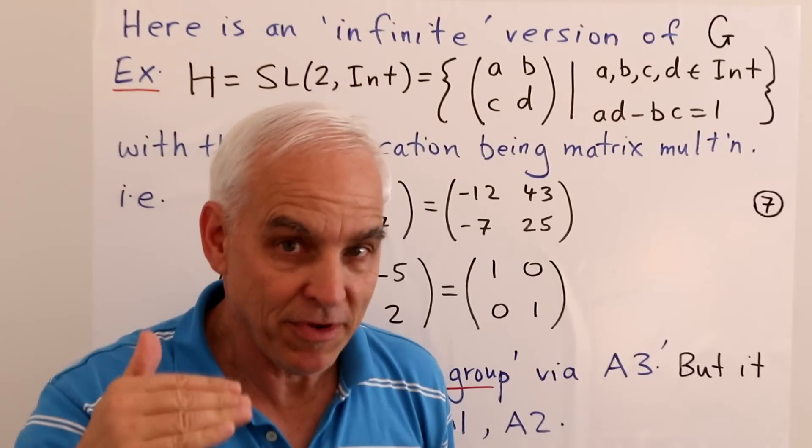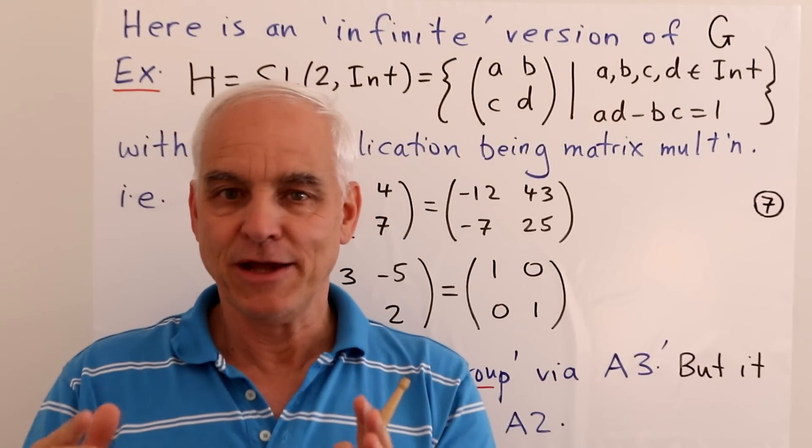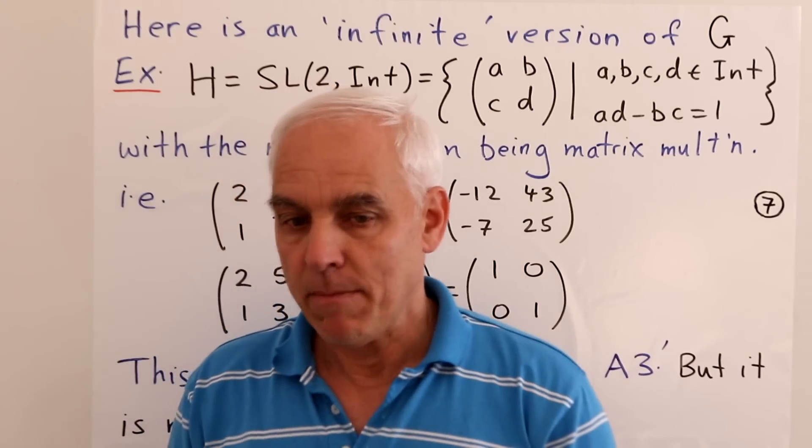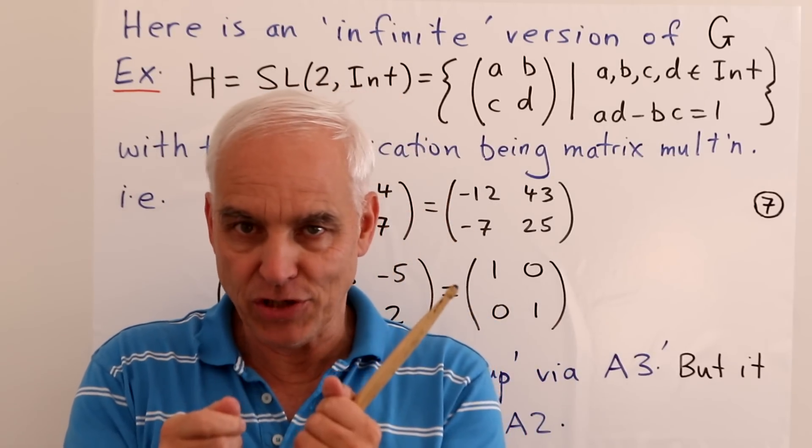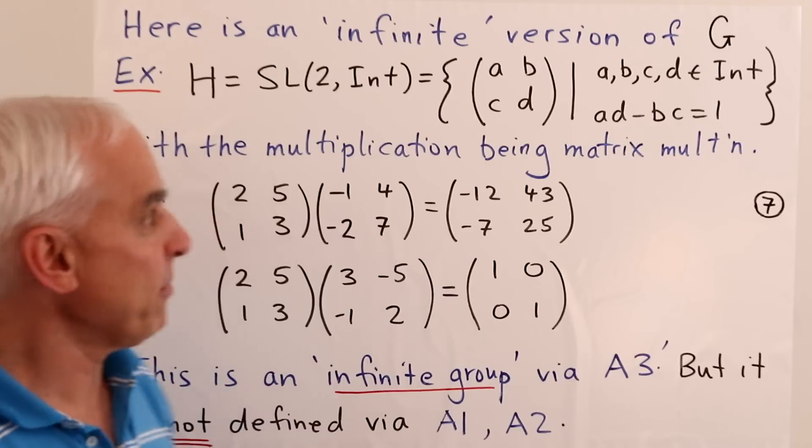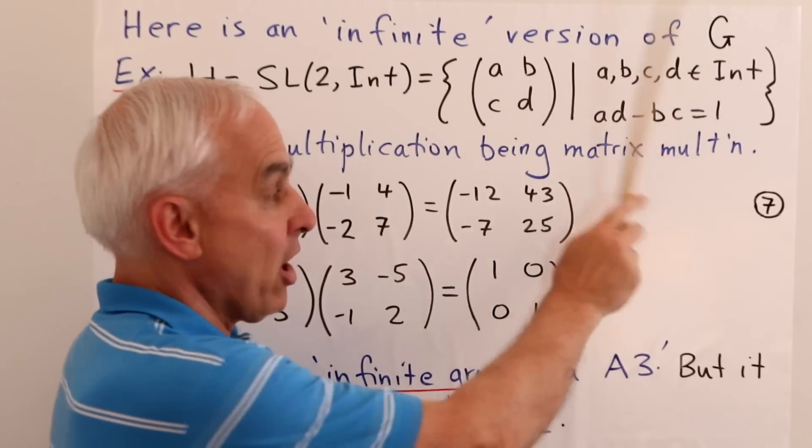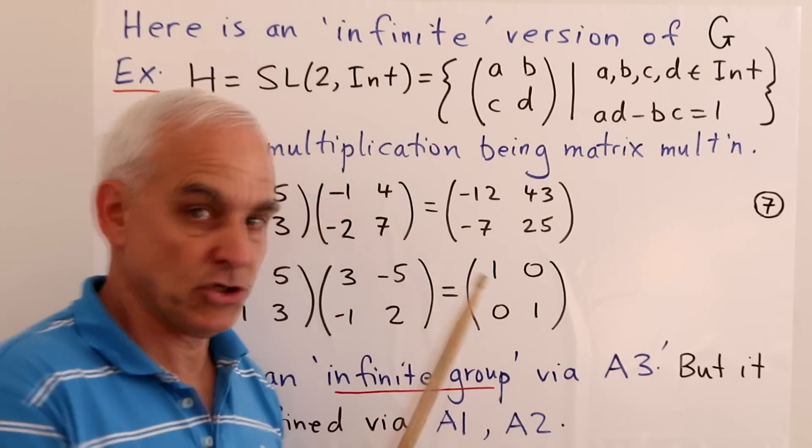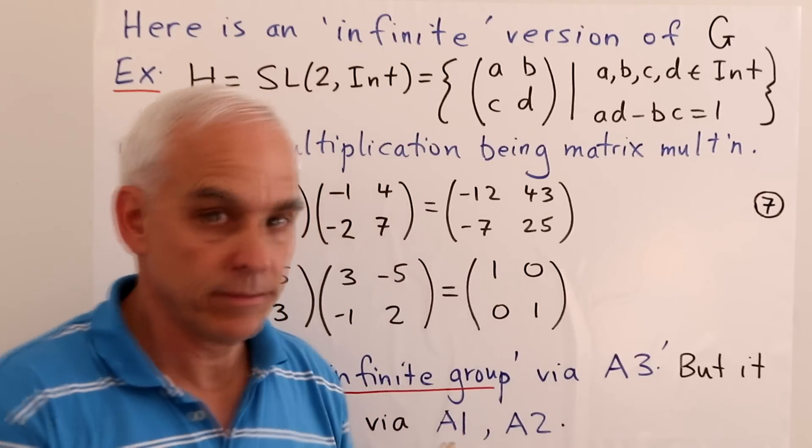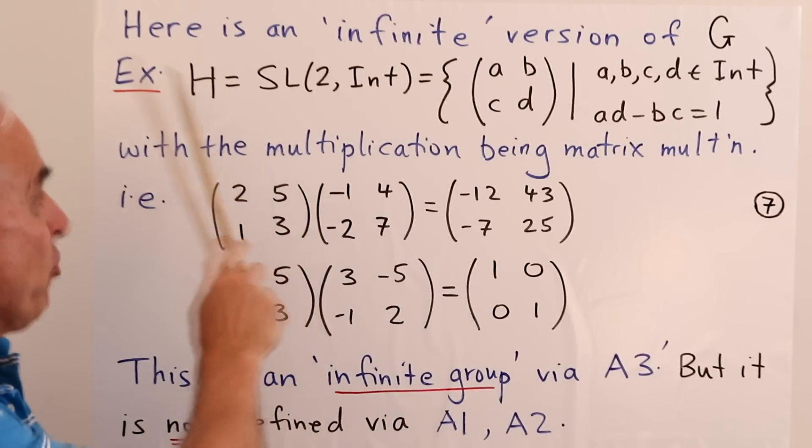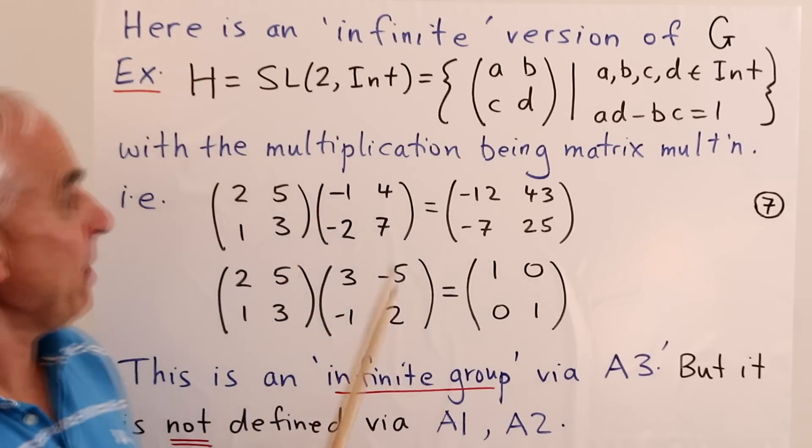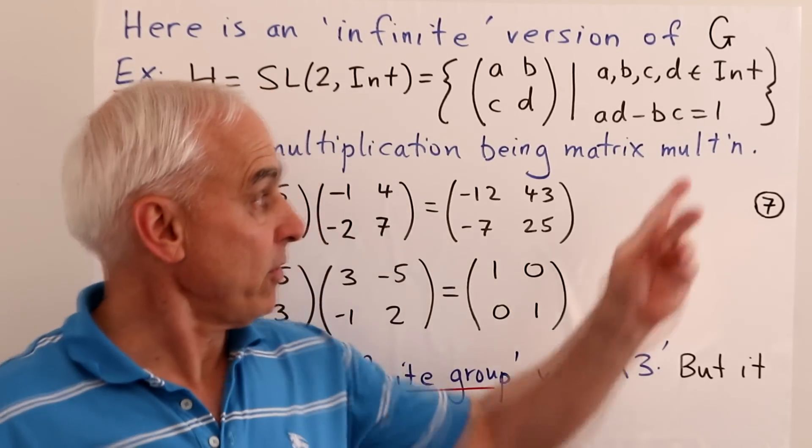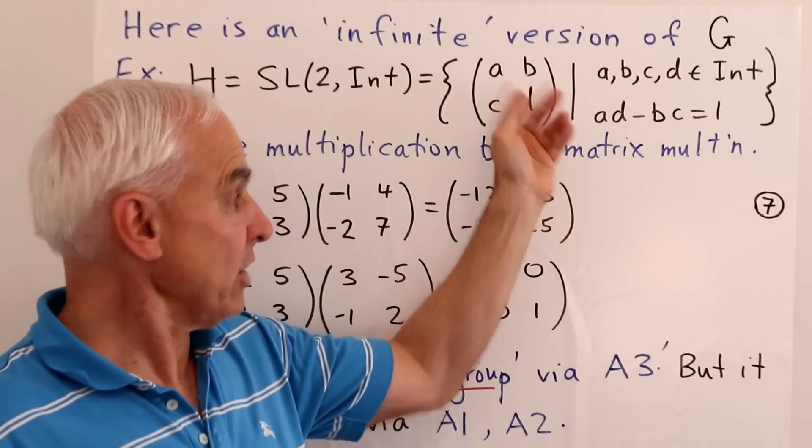And so now let's make a jump from this finite group that we've been looking at to a sort of infinite version. So we'll get an infinite version by replacing the finite condition that the entries are just zeros and ones with a more general condition that will allow A, B, C, and D to be arbitrary integers. And we won't do mod two arithmetic, we'll do ordinary integer arithmetic. So the determinant has to be exactly one. So this is now a new group, H, let's say. And its name might be SL2Int because it's special linear group, determinant one with integer entries.